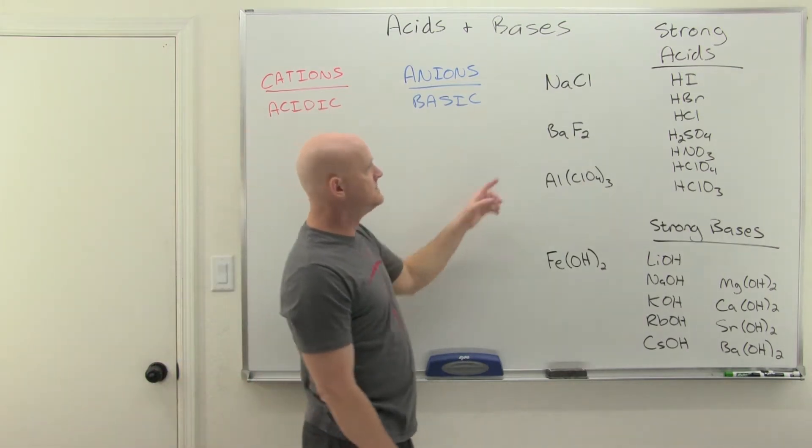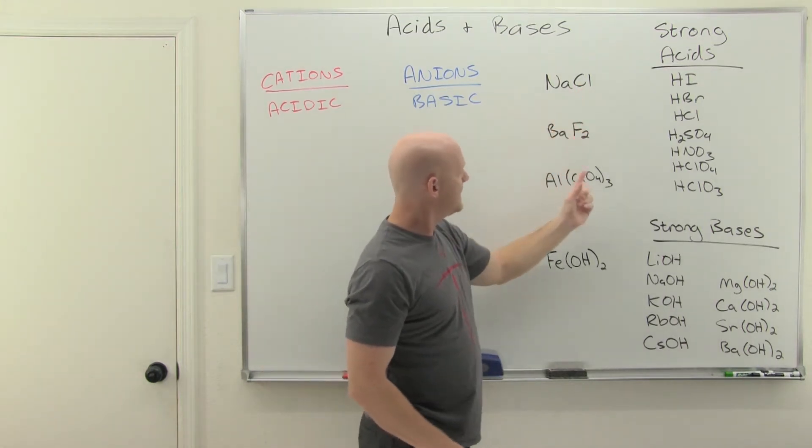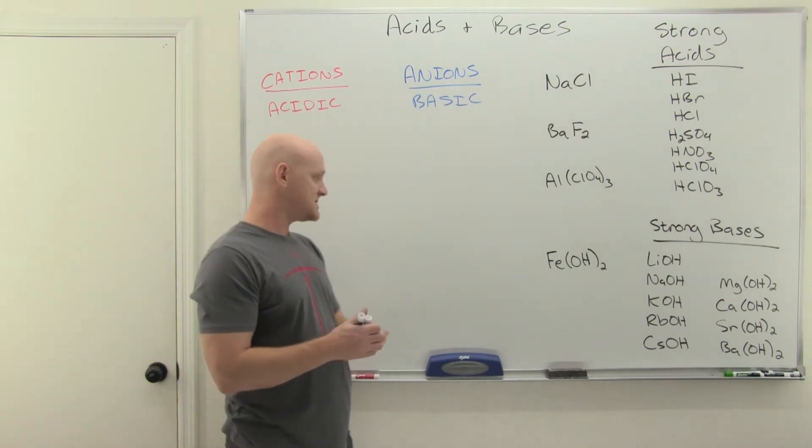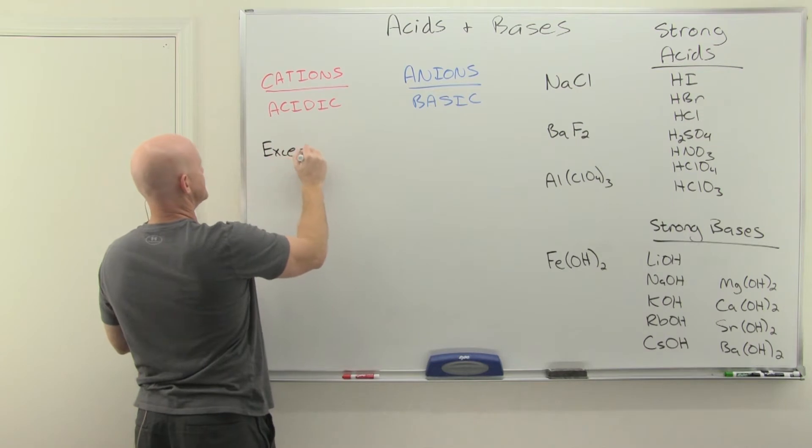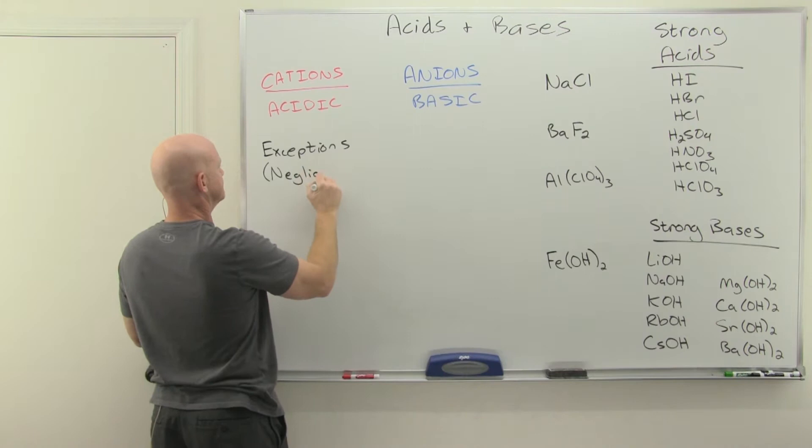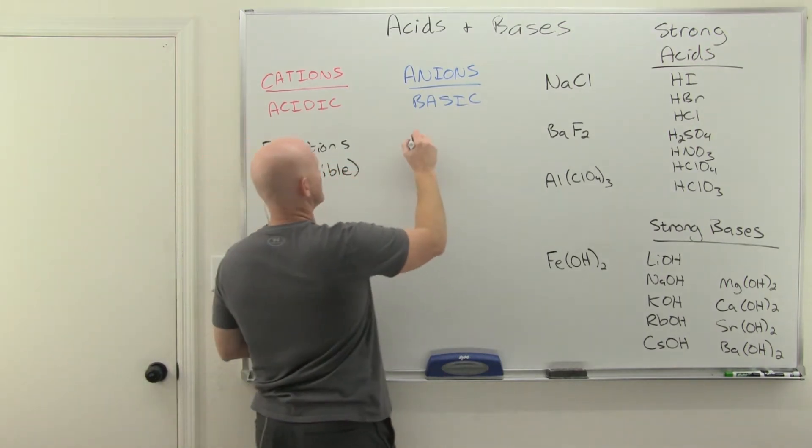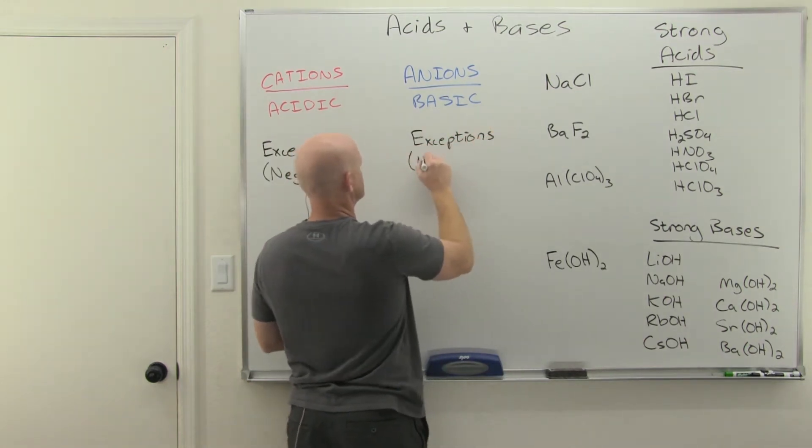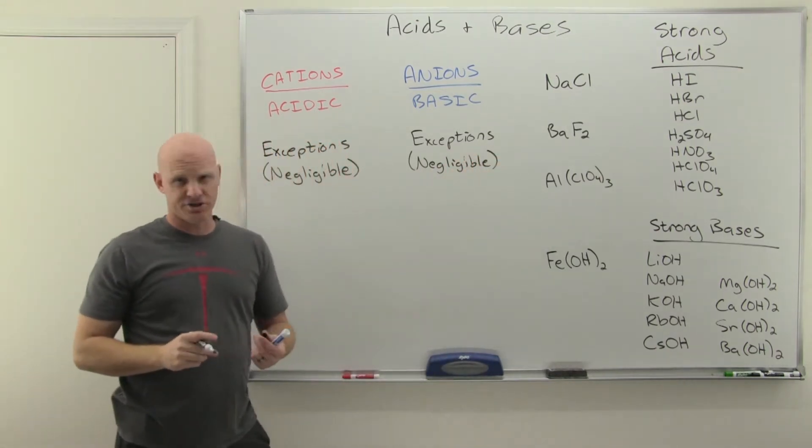If I look at this, I've got cations, they're probably acids. And anions, they're probably bases. You're supposed to remember the exceptions. The exceptions are going to be what we call negligible. They're not going to be acidic or basic. We've got some exceptions that are going to be negligible.